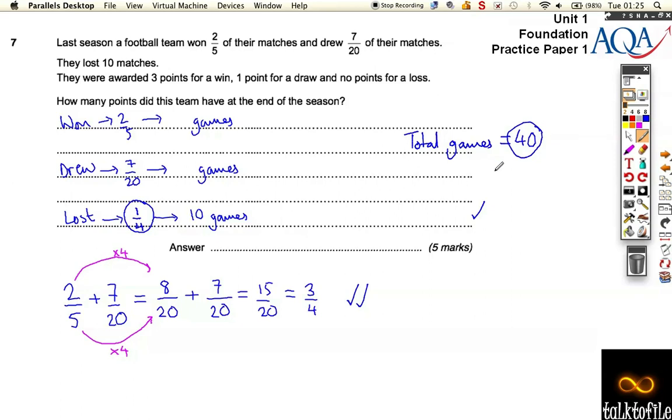So if they played 40 games, that means that, well, divide 40 by 20 gives us 2, which means that they drew 14 games. And divide 40 by 5, which gives us 8, and then times it by 2, gives us 16 games.